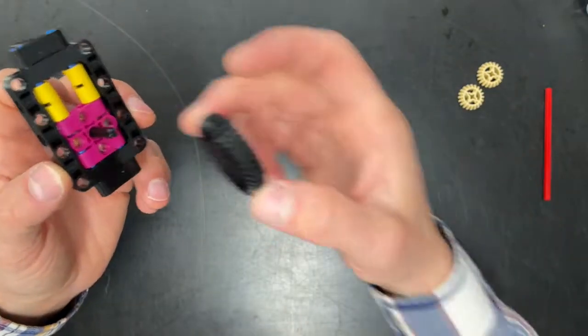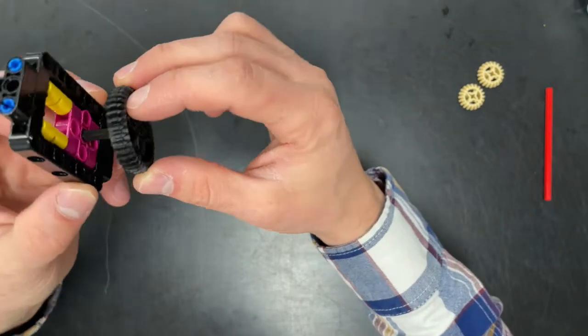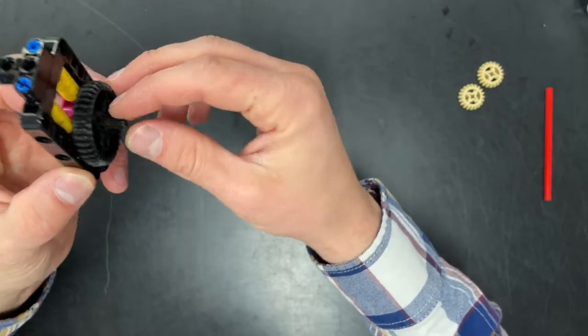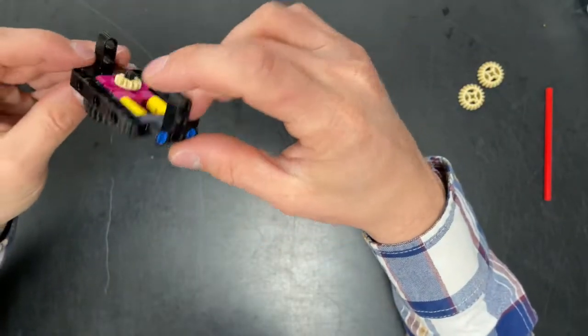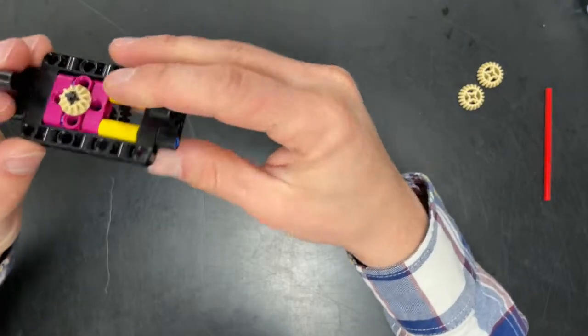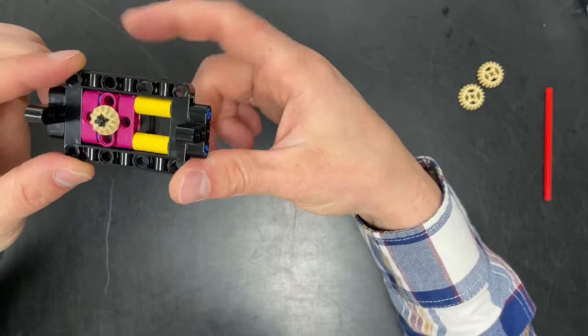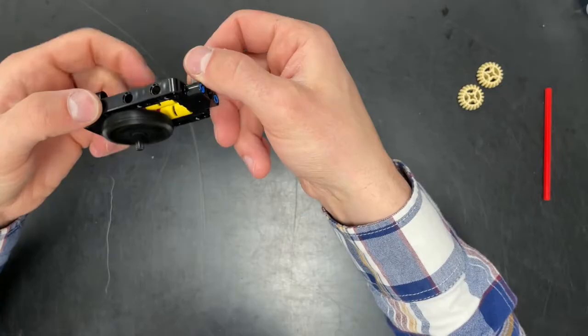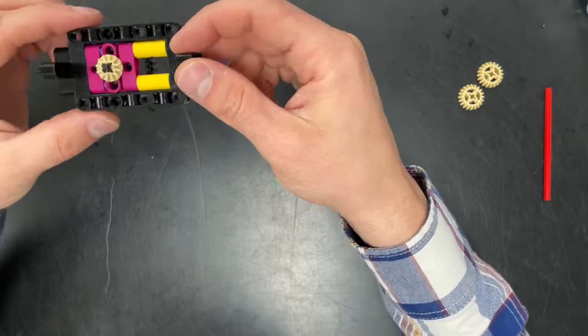And then I'm going to turn it over and I'm going to put this large black gear just like that. So it kind of sticks out the back. And if I spin the black gear, it spins the bevel gear. If I spin the bevel gear, it spins the black gear. All right.